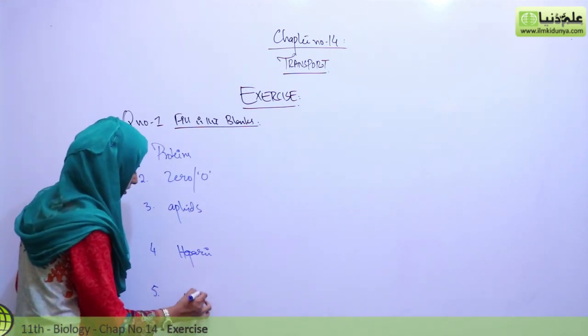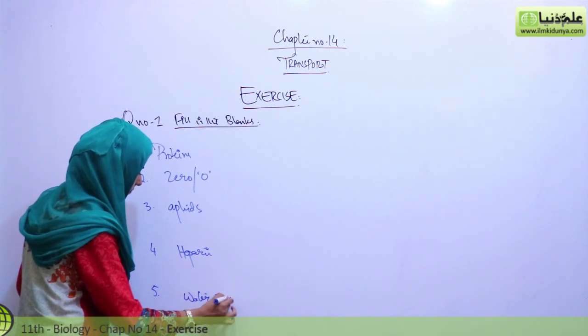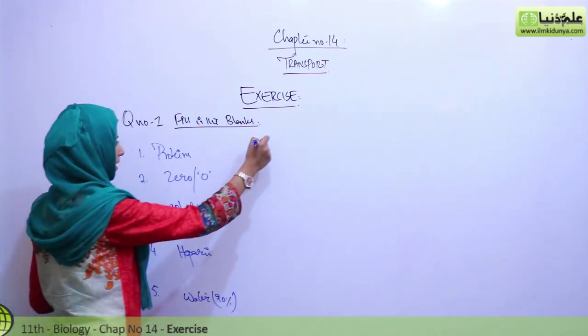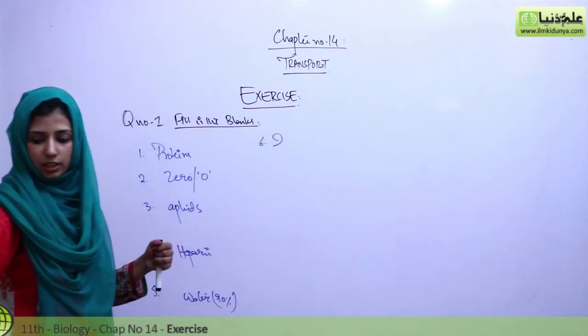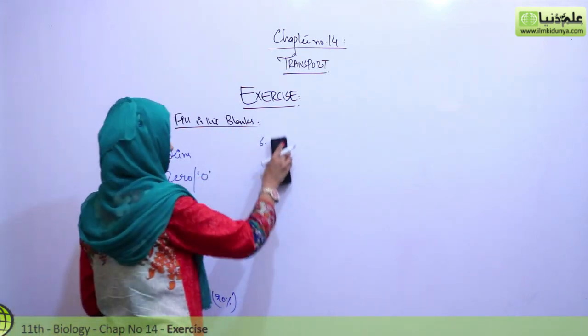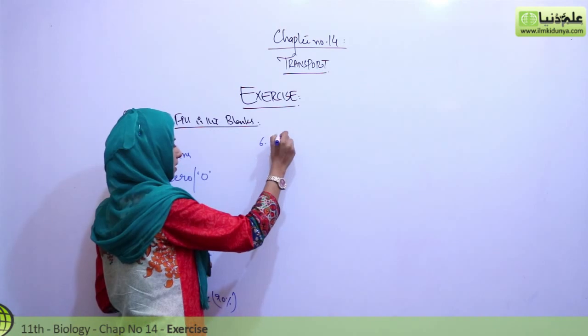Obviously water, because 90% water is in blood plasma. And sixth is imbibition, which was introduced by Sachs, a scientist.